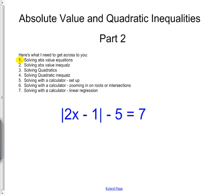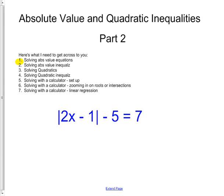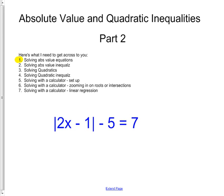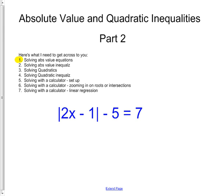We're talking about absolute value and quadratic inequalities - this is part two because we already learned this stuff yesterday, and now we're reinforcing it. The top thing highlighted says 'solving absolute value equations' - that's an equation because it has an equal sign. The next thing is inequalities, which have a greater than or equal to sign instead. So start by isolating the absolute value, then split into two parts.